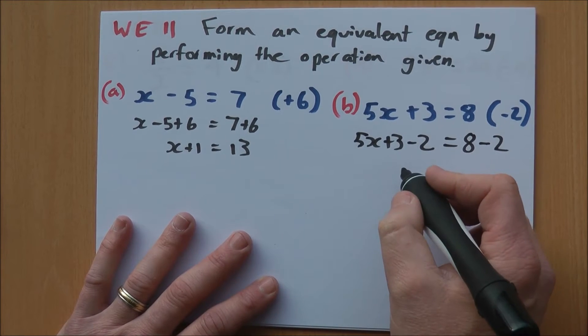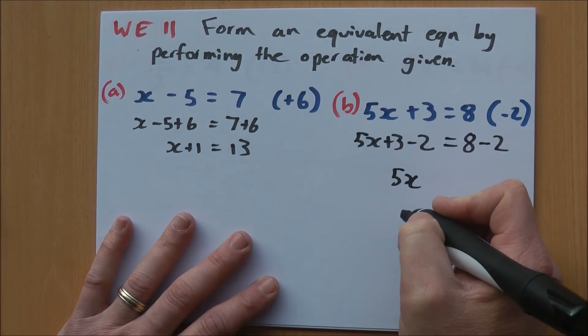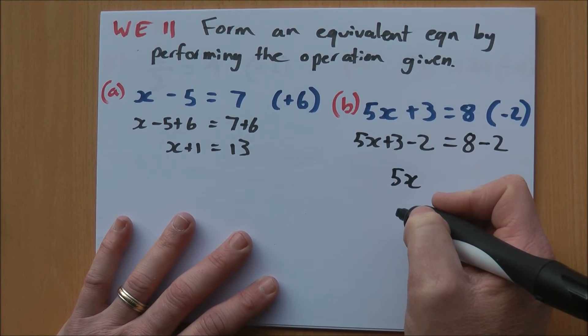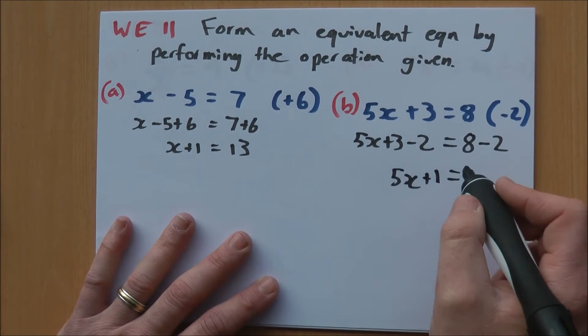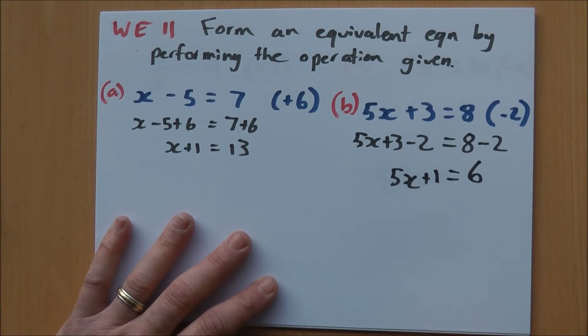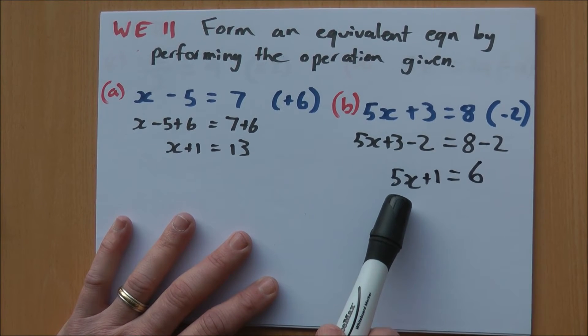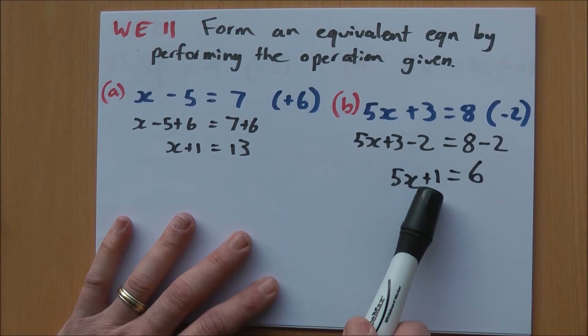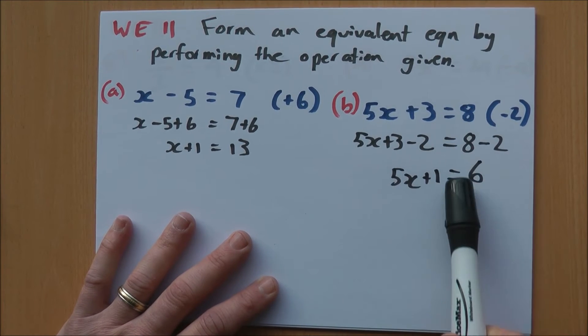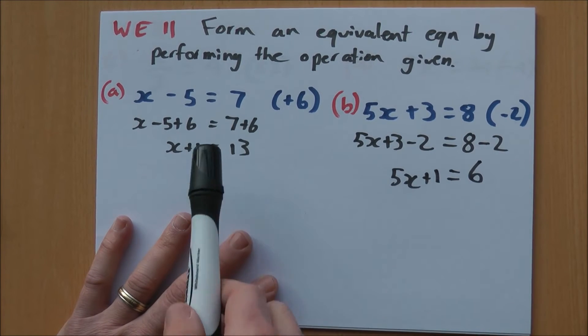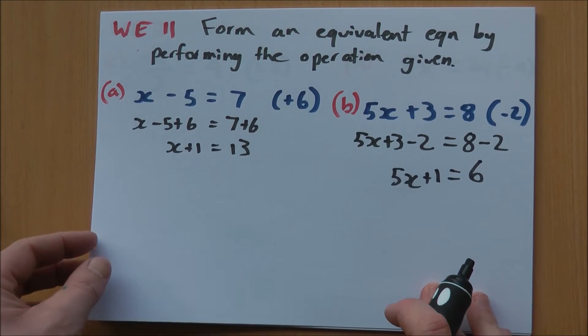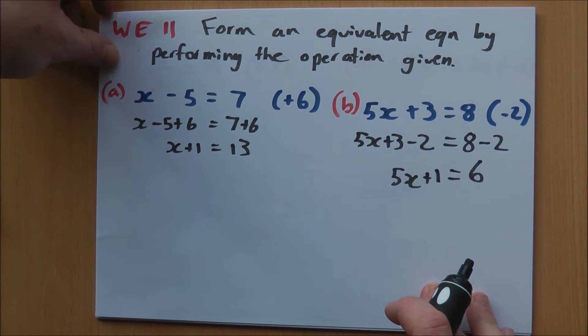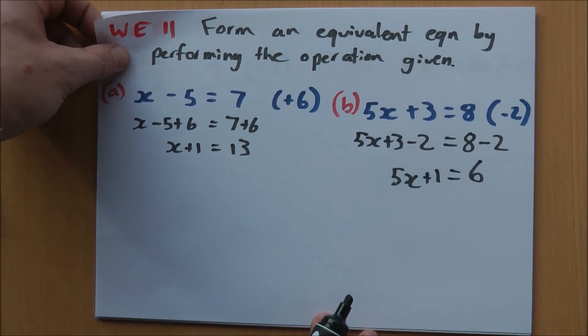I'm not going to do anything with my 5x, so I'll just write it down again. My 3 minus 2 is 1, it's a positive 1. And 8 minus 2 is 6. So 5x plus 1 equals 6. Notice how I'm trying to keep my equal signs lined up here on both sides. Just keeps the equation looking a little bit neater. It's the same principle as starting a sentence in English with a capital and finishing with a full stop, just trying to keep them lined up neatly like that.